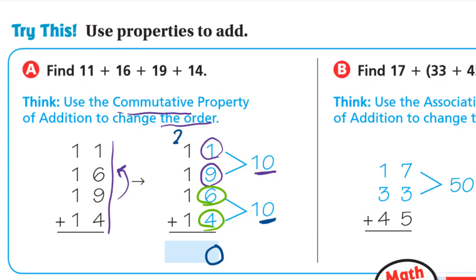1 plus 9 is 10, and 6 plus 4 is 10, so 10 plus 10 is 20. Write 0 and carry 2. Then in the tens: 1 plus 1 plus 1 plus 1 is 4, plus 2 is 6. So the answer is 60. We changed the order so that ones digits pair up to make 10s.